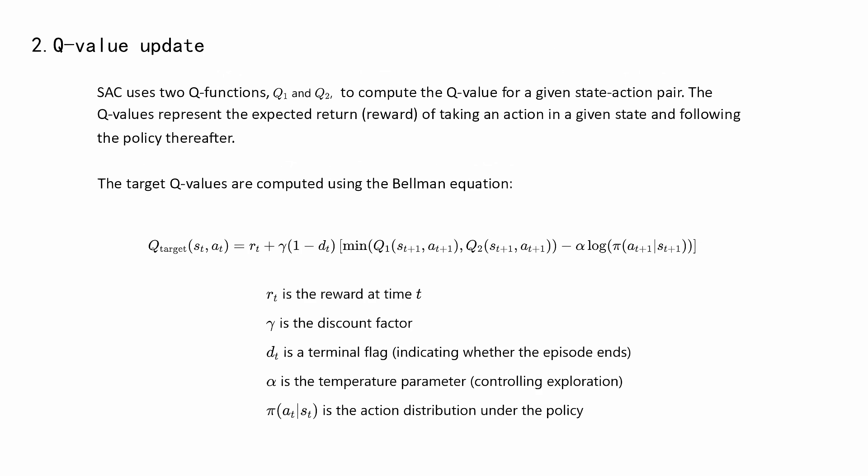RT is the reward at time t. Gamma is the discount factor. DT is a terminal flag, indicating whether the episode ends. Alpha is the temperature parameter, controlling exploration. Pi is the action distribution under the policy.